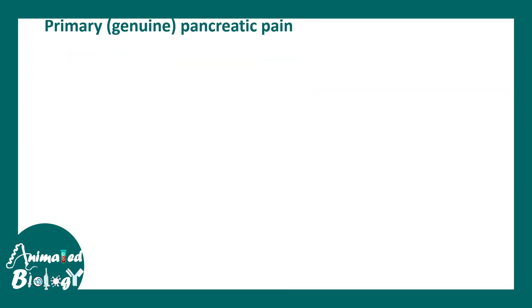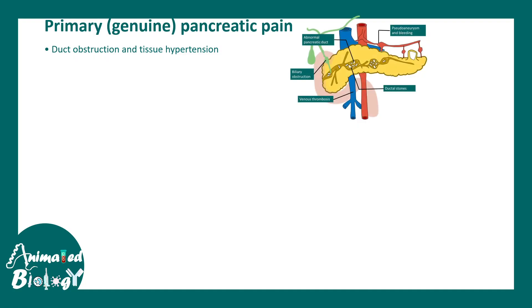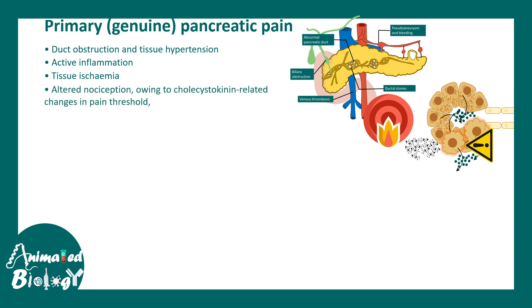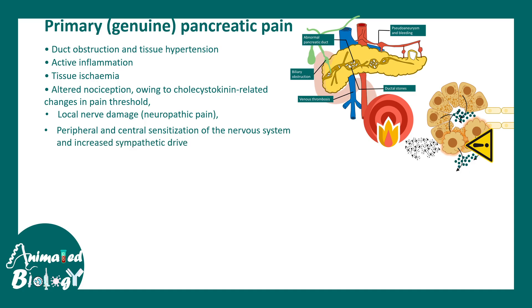There are primary and secondary reasons for pain. In primary pain, duct obstruction and tissue hypertension lead to pain. Active inflammation is another factor. Additionally, tissue ischemia and nervous factors such as altered nociception due to cholecystokinin-related changes in pain threshold, local nerve damage, and peripheral and central nerve sensitization can all lead to chronic abdominal pain in chronic pancreatitis.